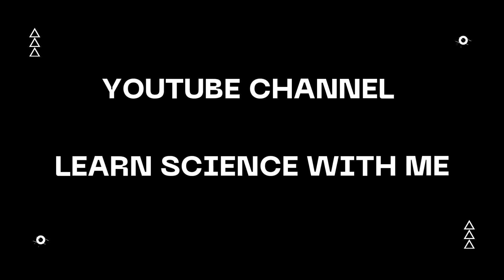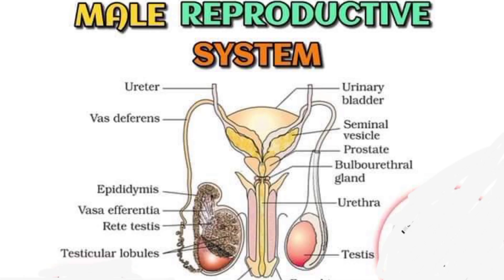Hello everyone, welcome to my YouTube channel 'Learn Science with Me.' Today we are going to talk about the male reproductive system. The male reproductive system consists of a group of organs that are responsible for reproduction as well as urination, or the urinary system.